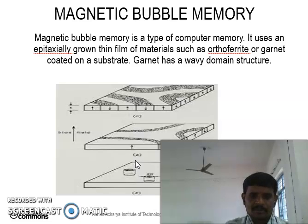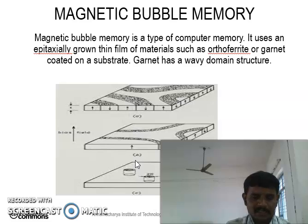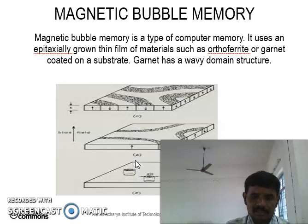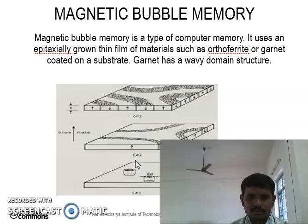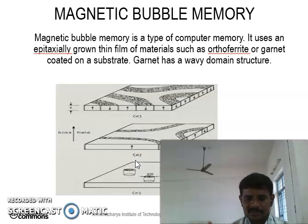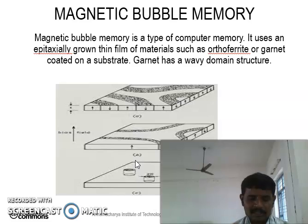With the exposed polarized visible light, one set of strips appears bright and another strip appears dark. When the light is exposed on the magnetic bubbles, where the light is incident, those strips appear as bright, and another type of strips appear as dark.